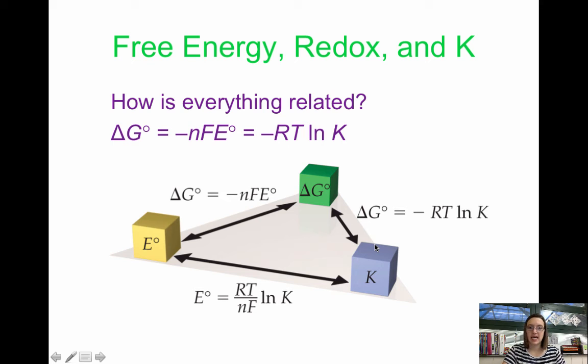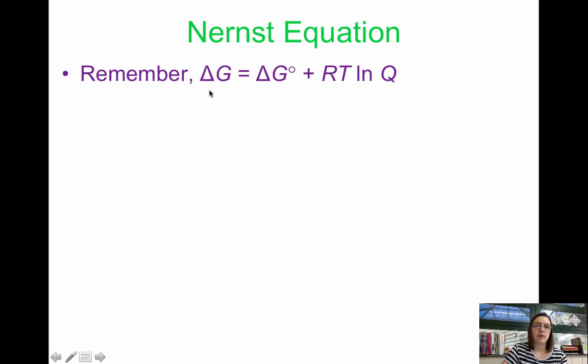We talked about this equation when we looked at thermodynamics. We have delta G, notice this is not standard, so this is at any condition. Delta G naught is at standard plus RT ln Q. It's Q because we're not at standard conditions.